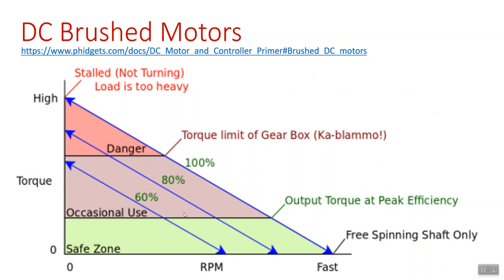These are not super well-defined, but there's a center here of the occasional use zone — you can do that occasionally, but you shouldn't run there constantly. Then there's sort of a torque limit of the gearbox where it says 'kablamo.' What it means is that at some point, if there was a gearbox connected — or whatever is connected — that might be too much torque for it. It could shear off the teeth. A gearbox increases torque while decreasing speed, so if you run the motor towards its highest torque, you're putting more torque into the gearbox, and eventually that could ruin it. Gearboxes often have a torque limit rated for them.